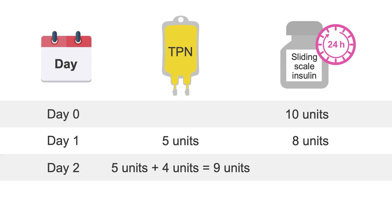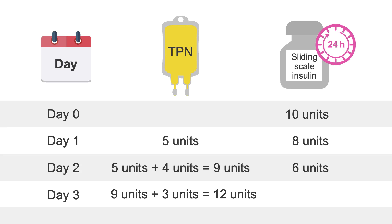On day two, they also require six units of sliding scale insulin. So for their day three TPN bag, you could add an extra three units, meaning the total is now 12 units. With each new TPN bag, you'll repeat this process so that the amount of insulin slowly increases until stable blood glucose is achieved and the patient no longer requires additional insulin outside of what is included in the TPN.